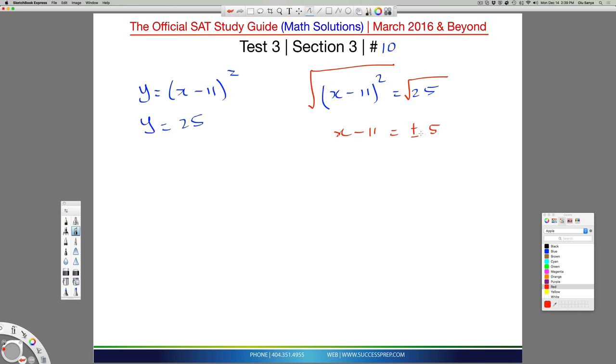Now you're thinking, where did plus or minus 5 come from? Most people would have just said 5 here, but anytime you do the square root of something, it's always plus or minus. The reason is because plus 5 times plus 5 would give me 25, and minus 5 times minus 5 also gives me 25. So there are two options there.